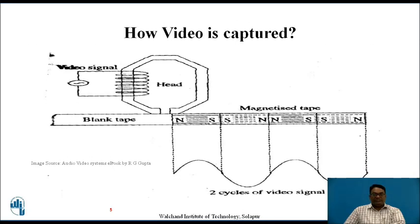So how is video captured? This diagram explains how a video is captured. This is basically the blank magnetized tape. This is the soft iron core which is cut at the center, having a gap. The video signals are given to these windings and these act as the input. As soon as the input is given, electromagnetic flux is generated. This flux travels through the head and then gets induced on the blank magnetized tape. This area generally denotes the information which is recorded on the magnetized tape.